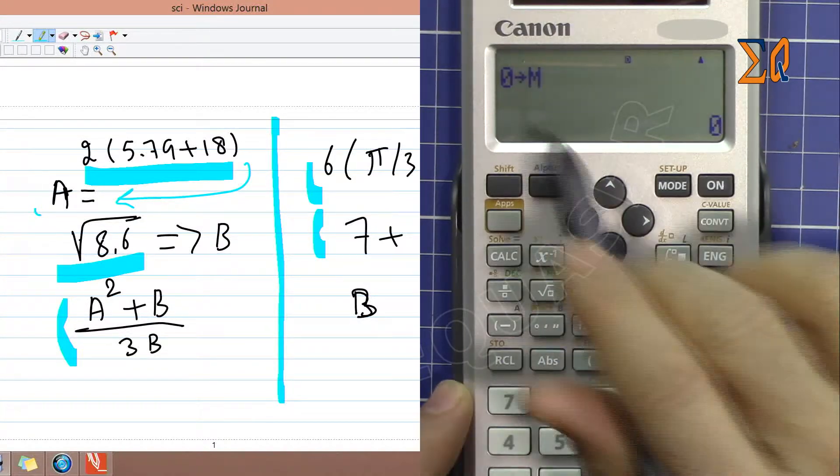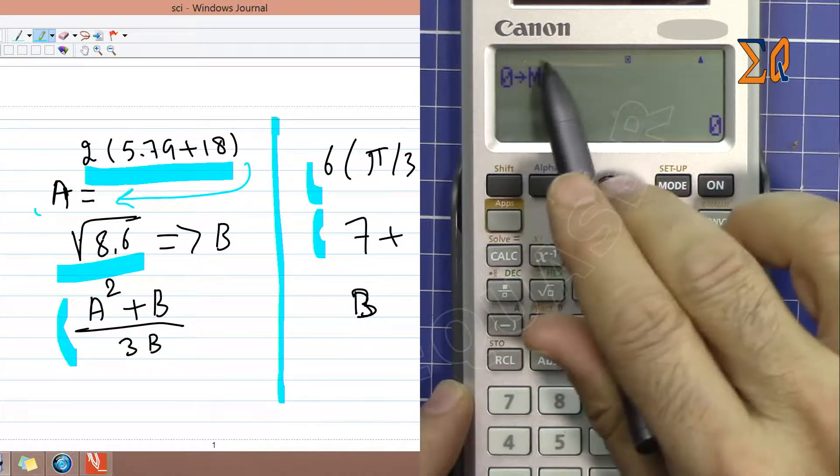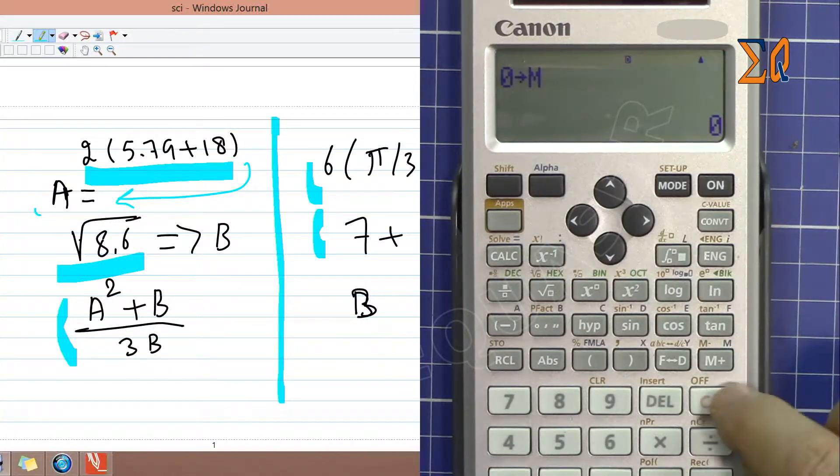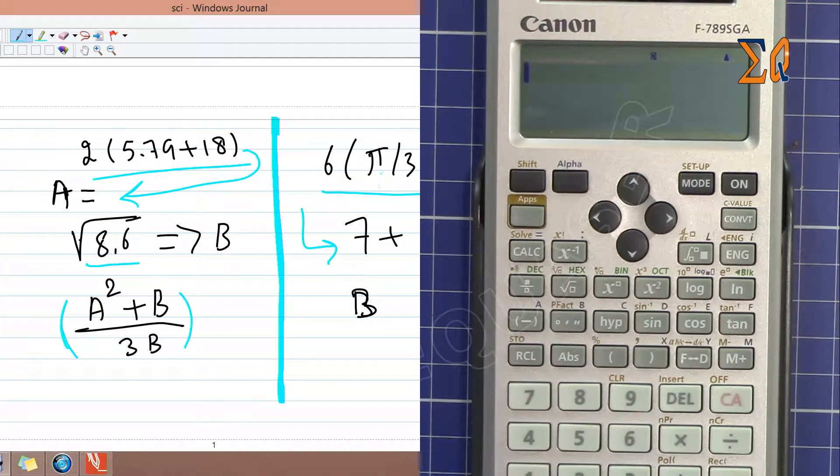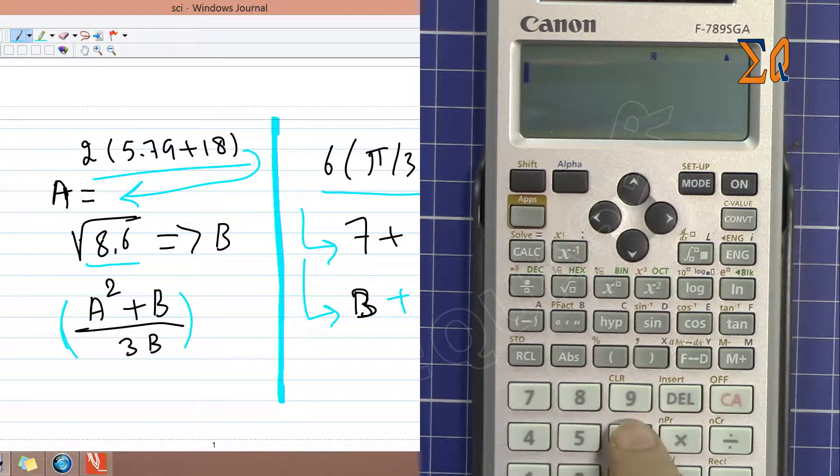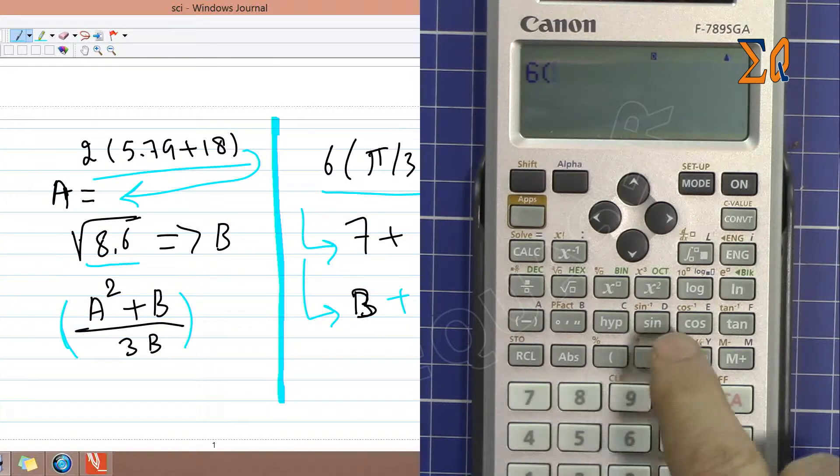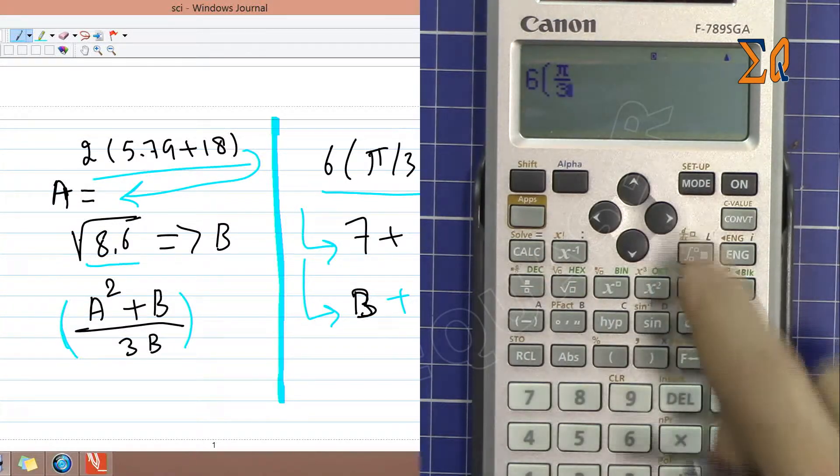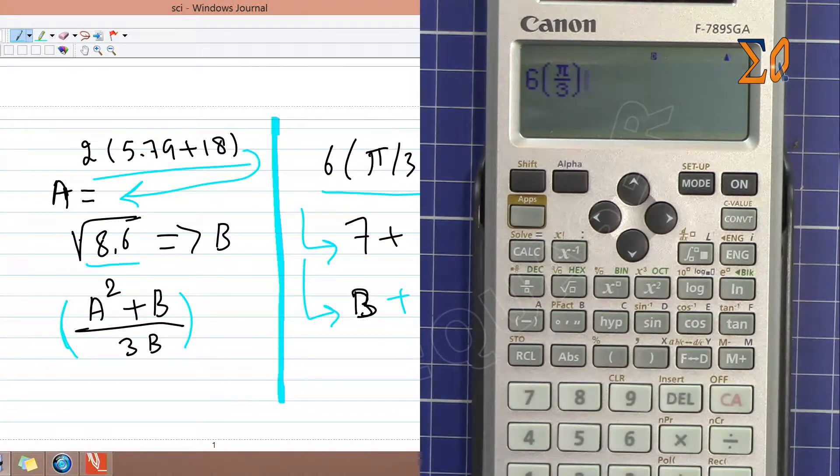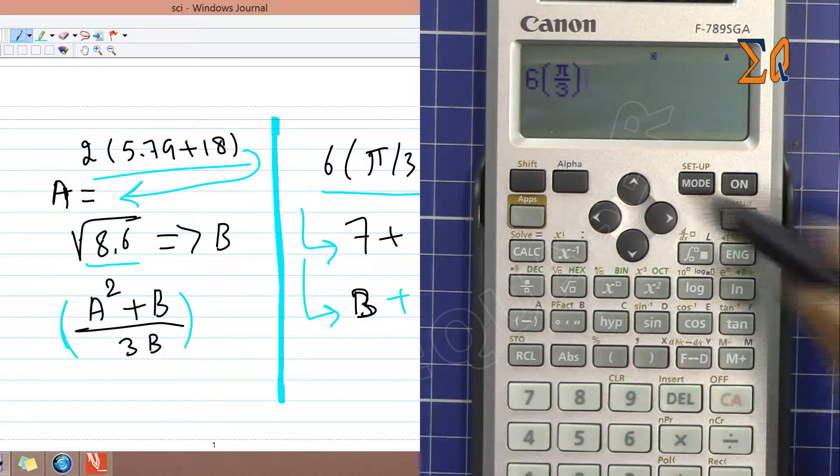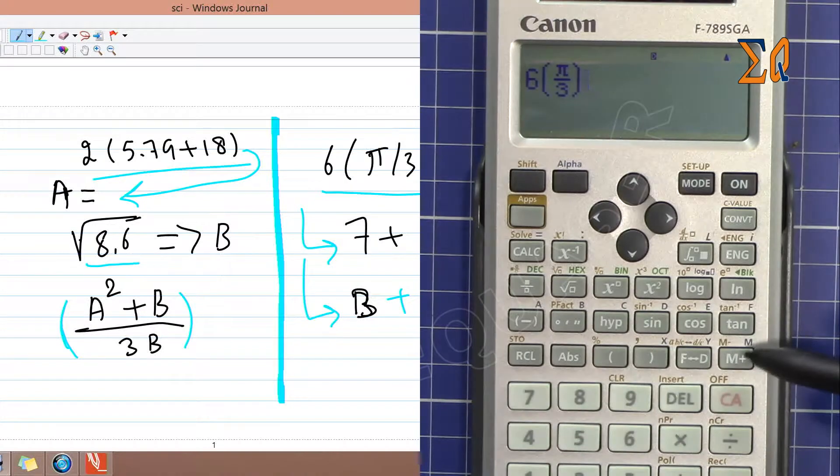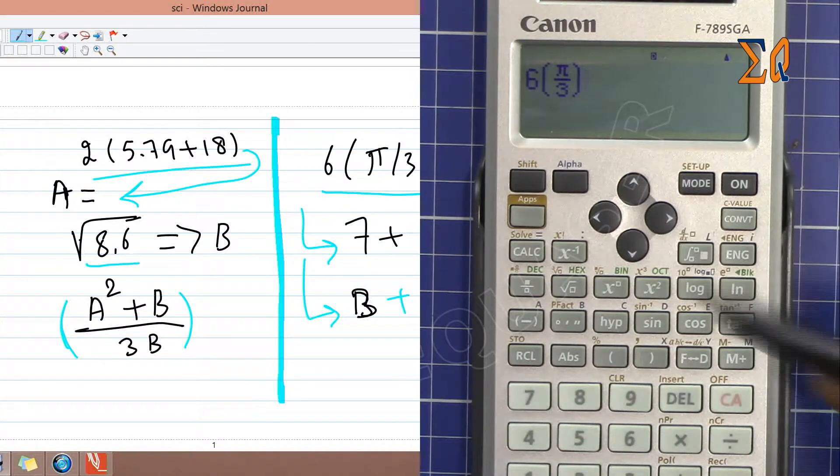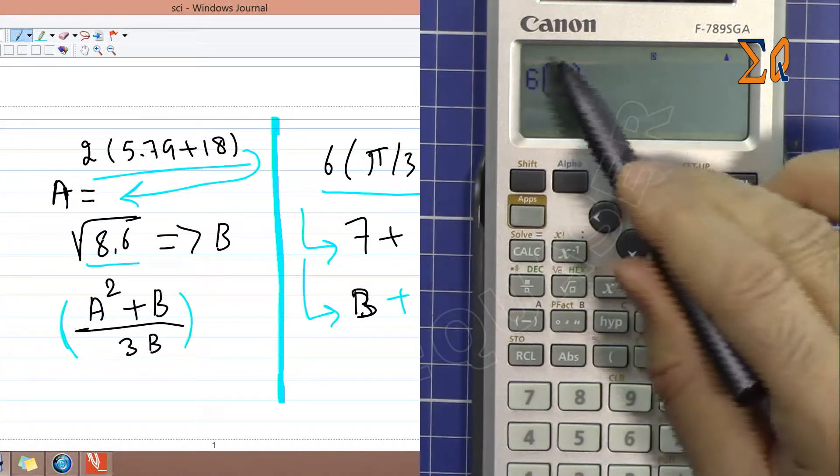Add 7 to that and after that you want to add B to the same thing. So let's say 6 pi over 3. Shift pi over 3. So this is a value and you want to store it in a memory with addition. Make sure if you are using this memory there should not be any M. So pay attention, when there is no M, the memory is empty.